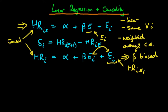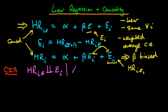One way to get around this problem is by using the conditional independence assumption (CIA). The CIA states that the potential resting heart rate of individual I choosing exercise level E is independent of the exercise level they actually choose, E_I, given a vector of covariates X_I.